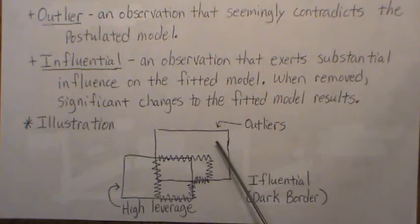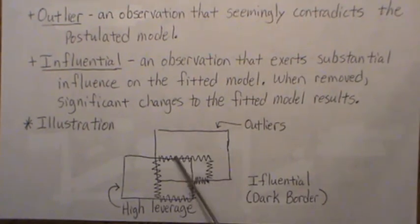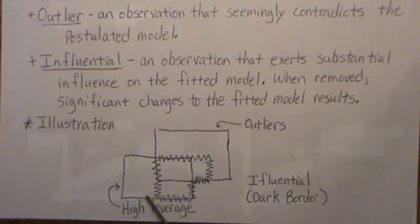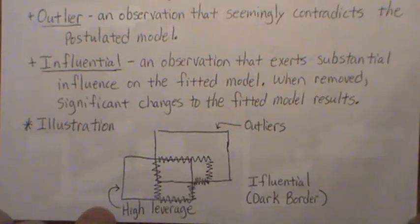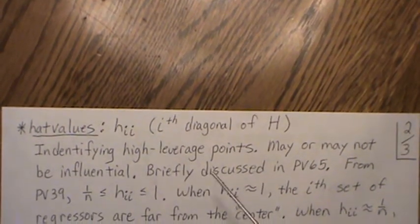The square representing outliers, the square representing high leverage, and the dark border representing influential points can overlap. We can have outliers that are not high leverage — they're towards the center of the regressor space and don't exert substantial influence on the model. High leverage means an observation is far removed from the dataset, but it doesn't necessarily mean it's an outlier or that it has influence on the model.